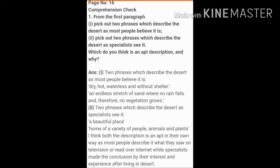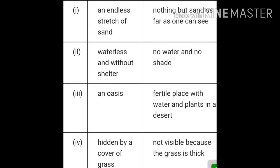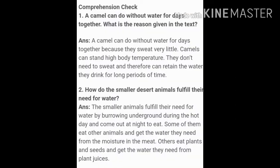The next question involves matching phrases from the text. The correct matches are: 'an endless stretch of sand' matches with 'nothing but sand as far as one can see'; 'waterless and without shelter' matches with 'no water and no shade'; 'oasis' matches with 'fertile place with water and plants in a desert'; and 'hidden by a cover of grass' matches with 'not visible because the grass is thick.'